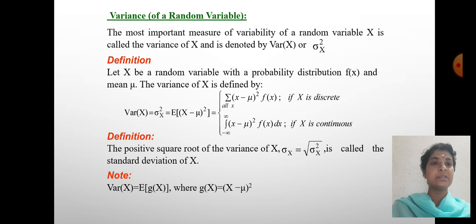The variance of X is defined by Var(X) = σx² = sum of (xi - μ)²·f(x) if X is discrete. Integral from minus infinity to plus infinity of (x - μ)²·f(x)dx if X is continuous. The positive square root of the variance of X, σx = √(σx²), is called the standard deviation of X.